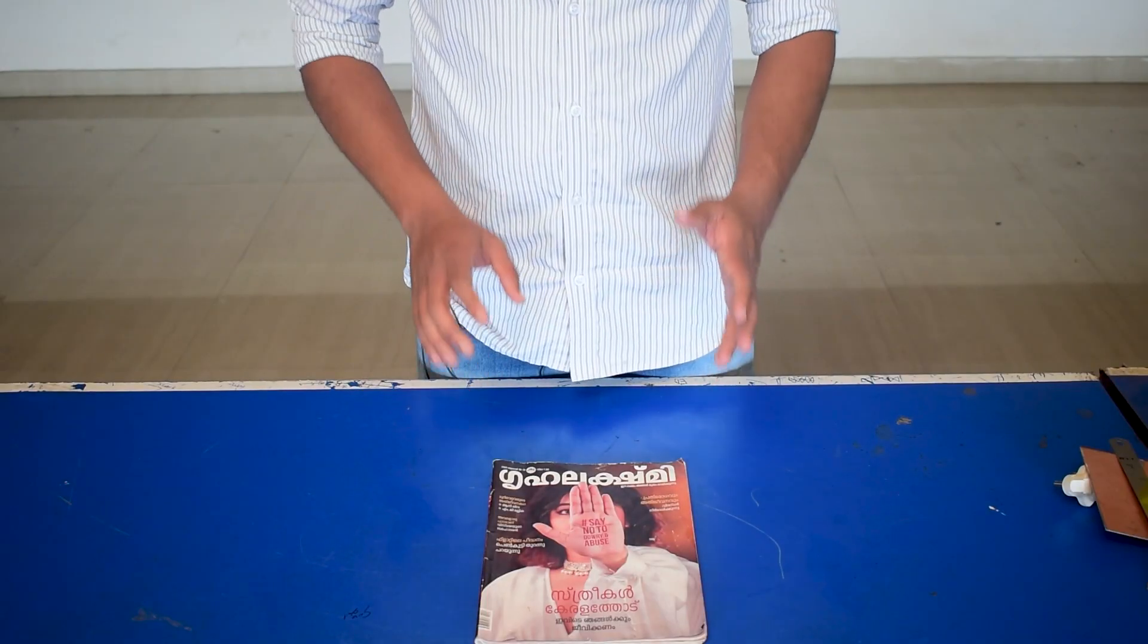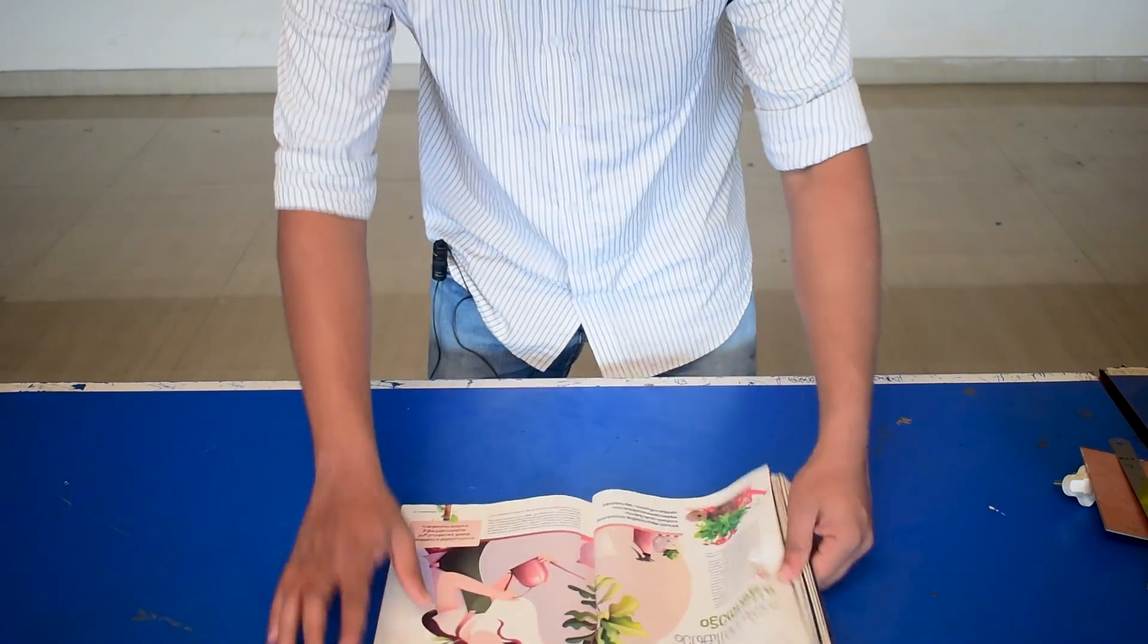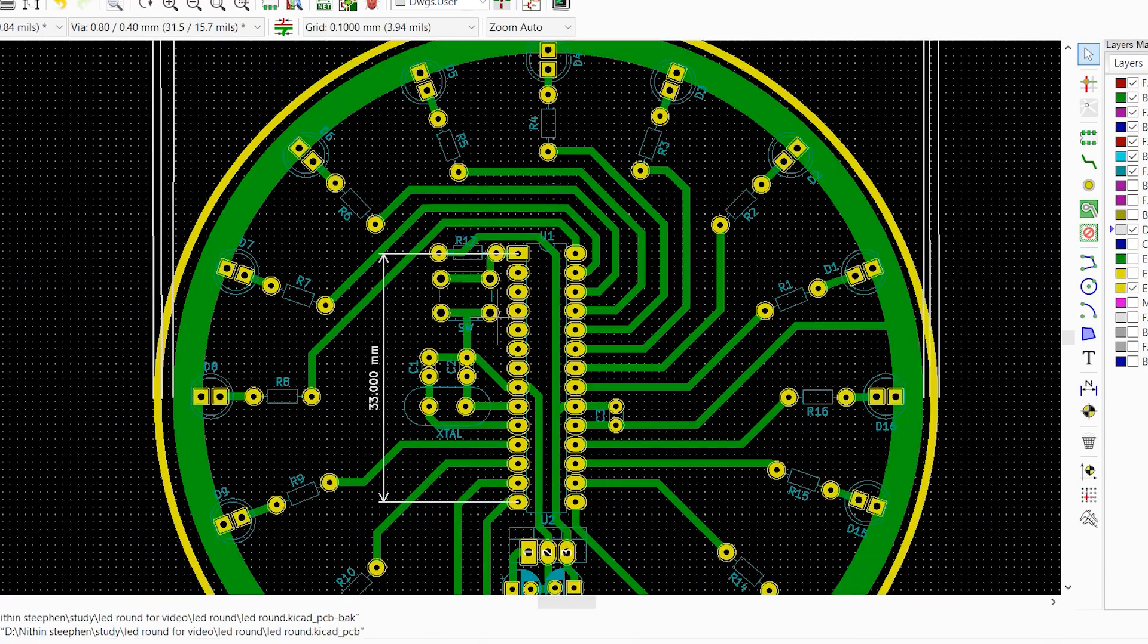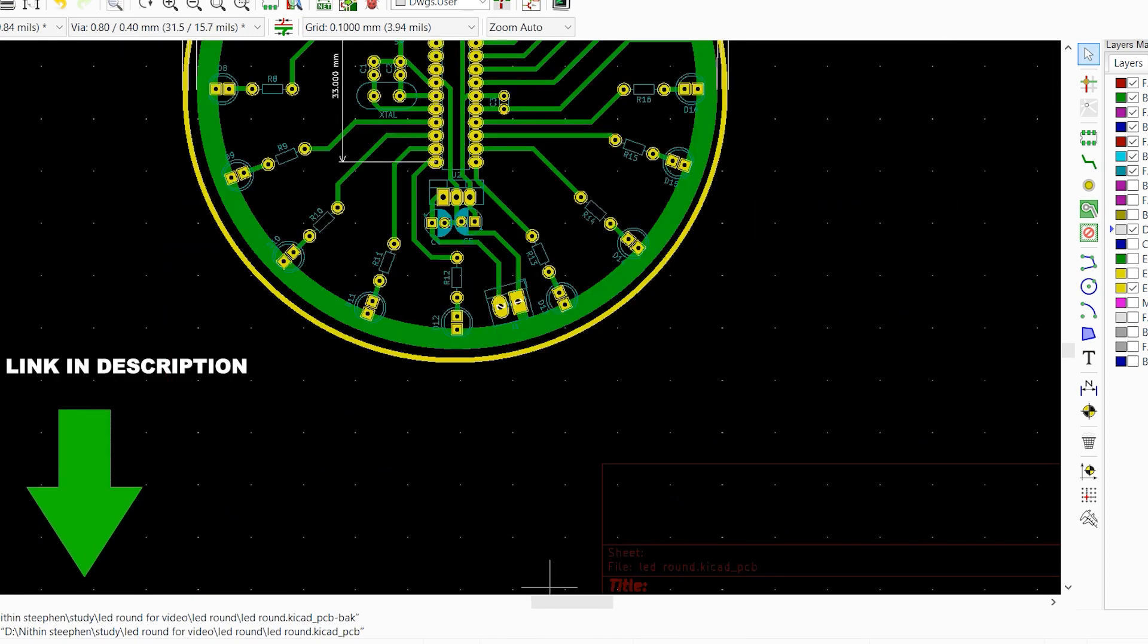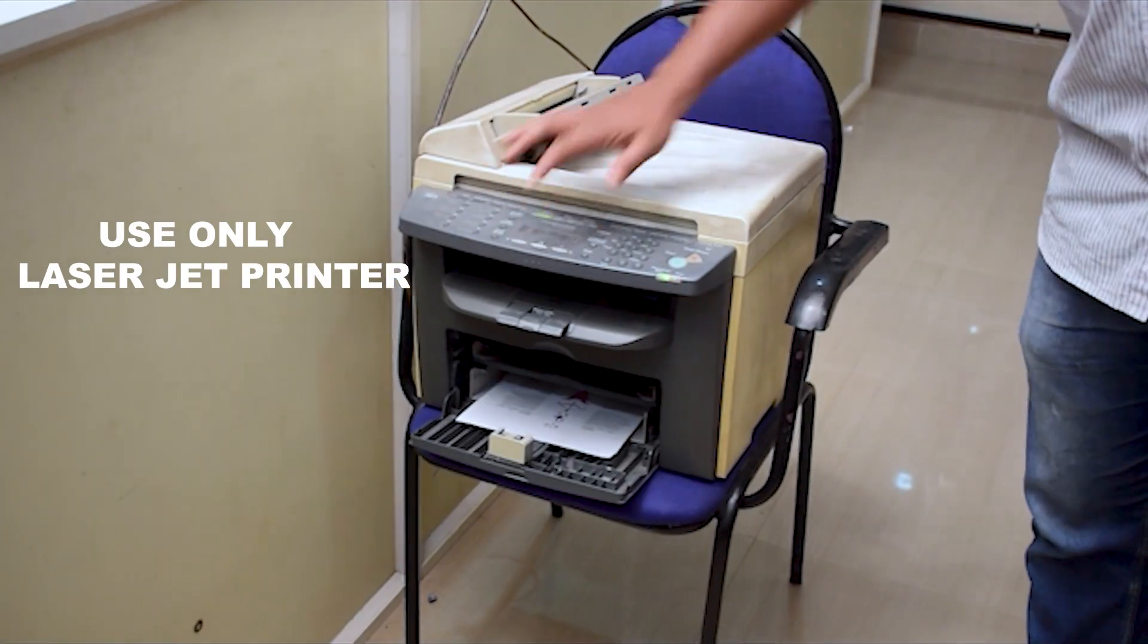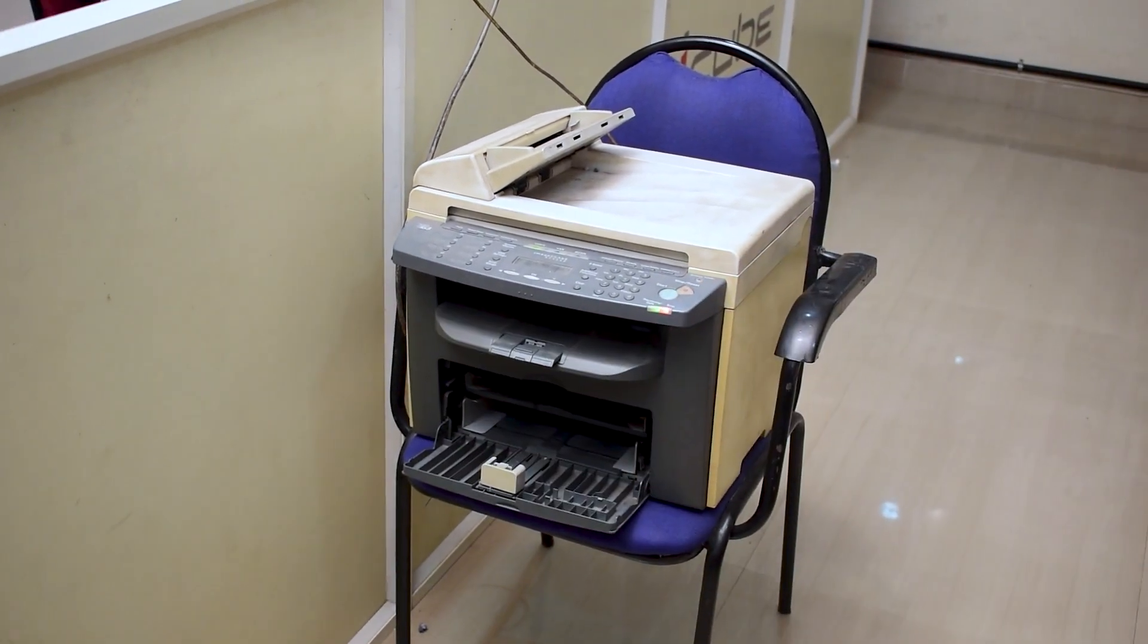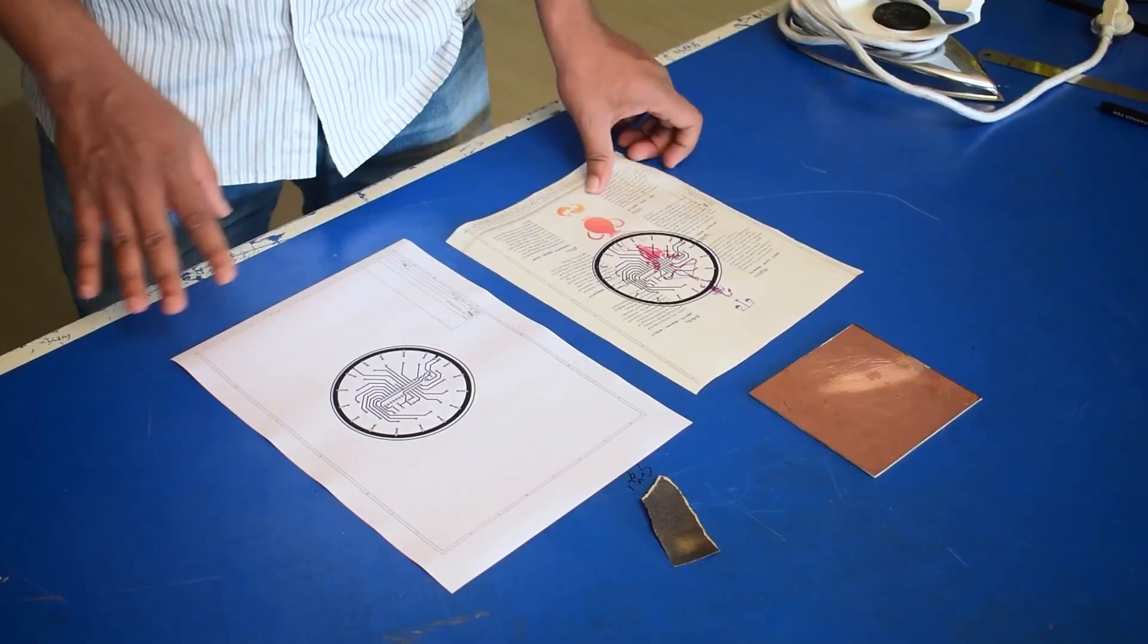First, we have to print the circuit design on the glossy paper. Let's take a paper from the magazine. We have already created the design of the PCB. The link of this design is given in the description. While taking print, use only laser jet printer for printing. Yes, the design is clear and ready. We got the design exactly as we designed on the glossy paper.